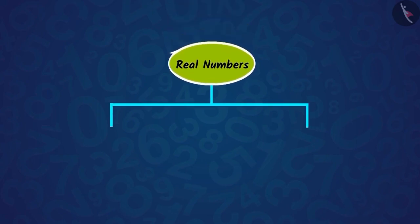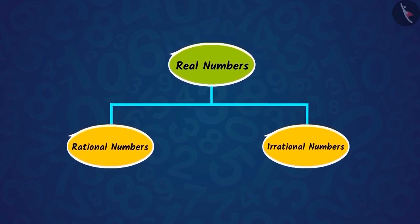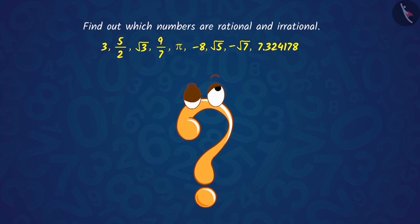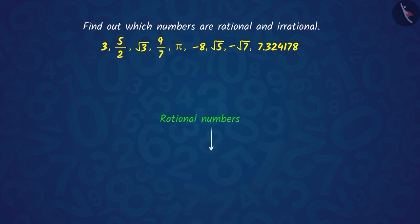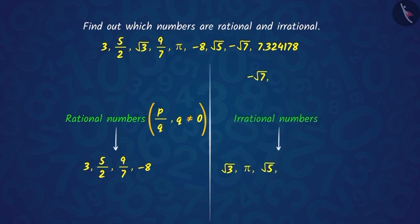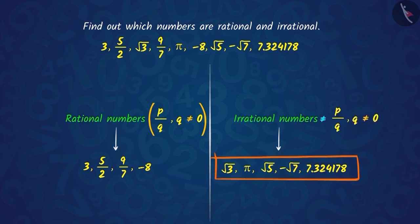You all know that real numbers are made up of rational and irrational numbers. Dear children, can you sort these real numbers into rational and irrational numbers? Well done! The numbers in the first column are rational because they can be written as P over Q. And the numbers in the second column are irrational because they cannot be written as P over Q.